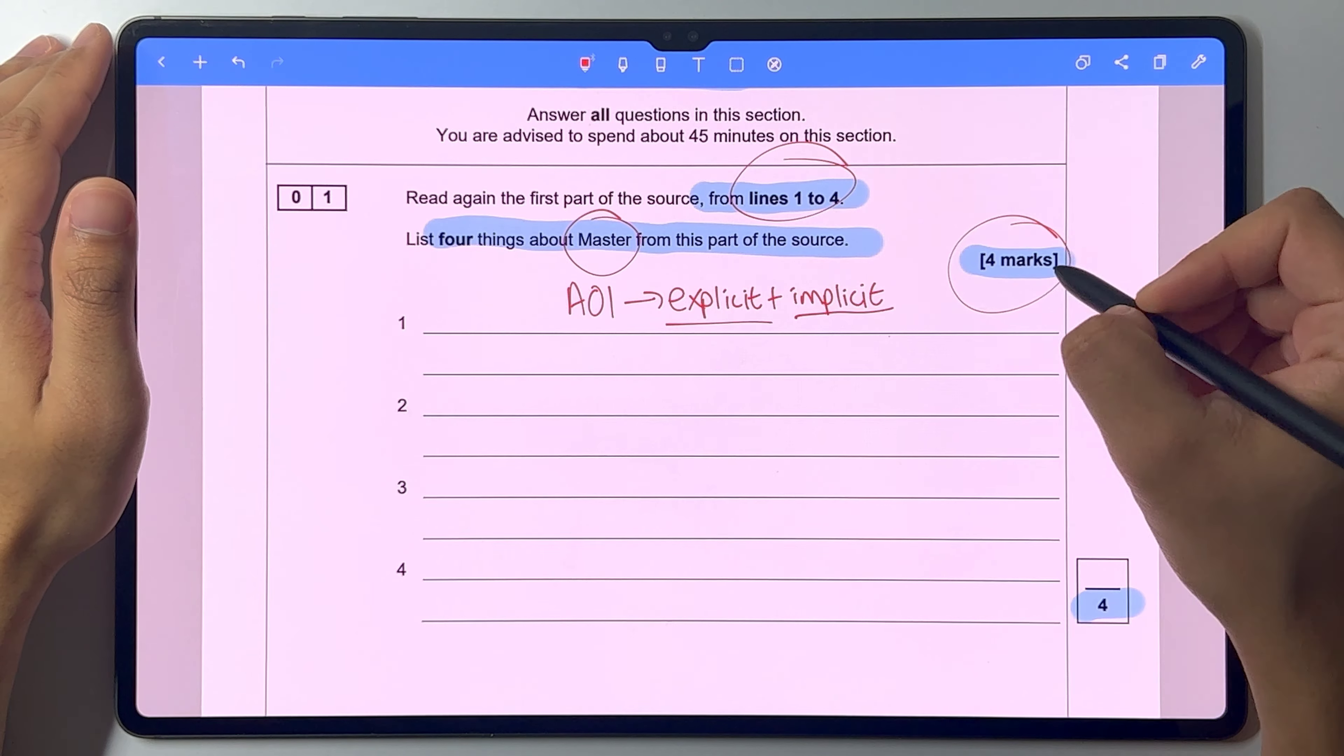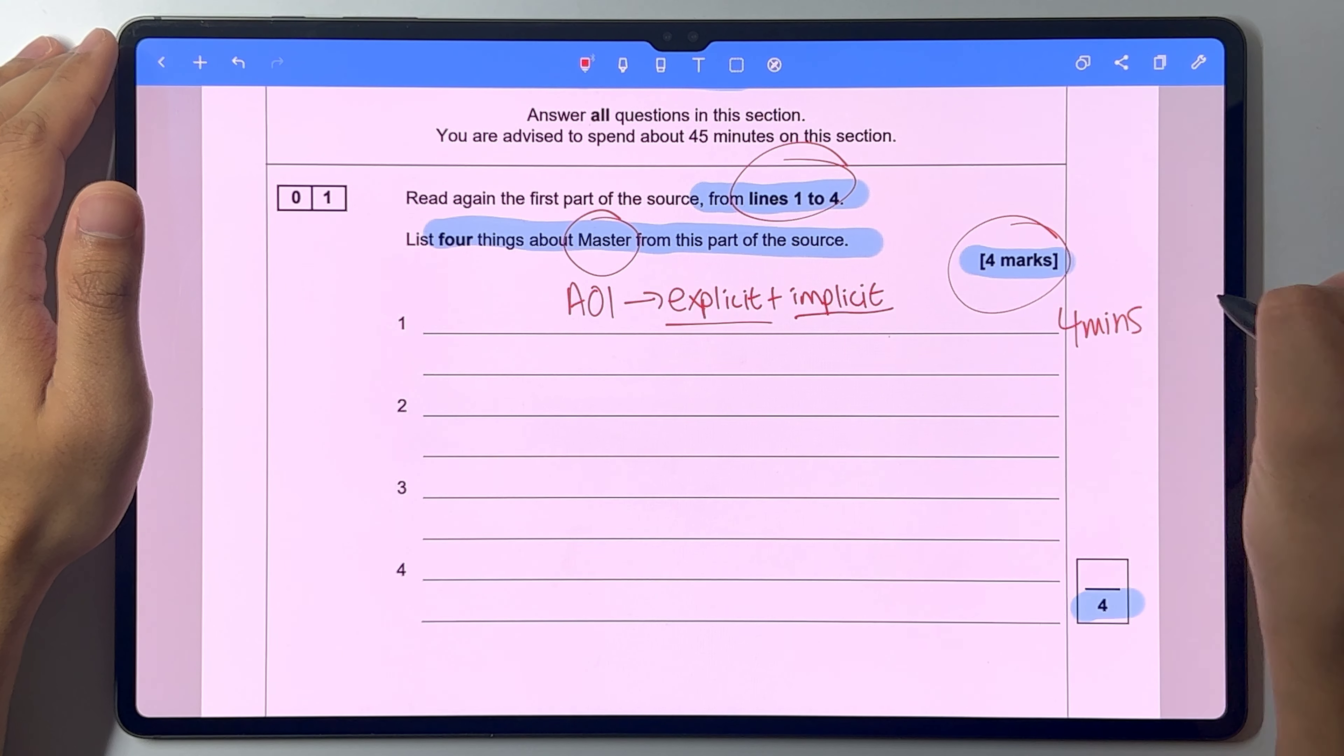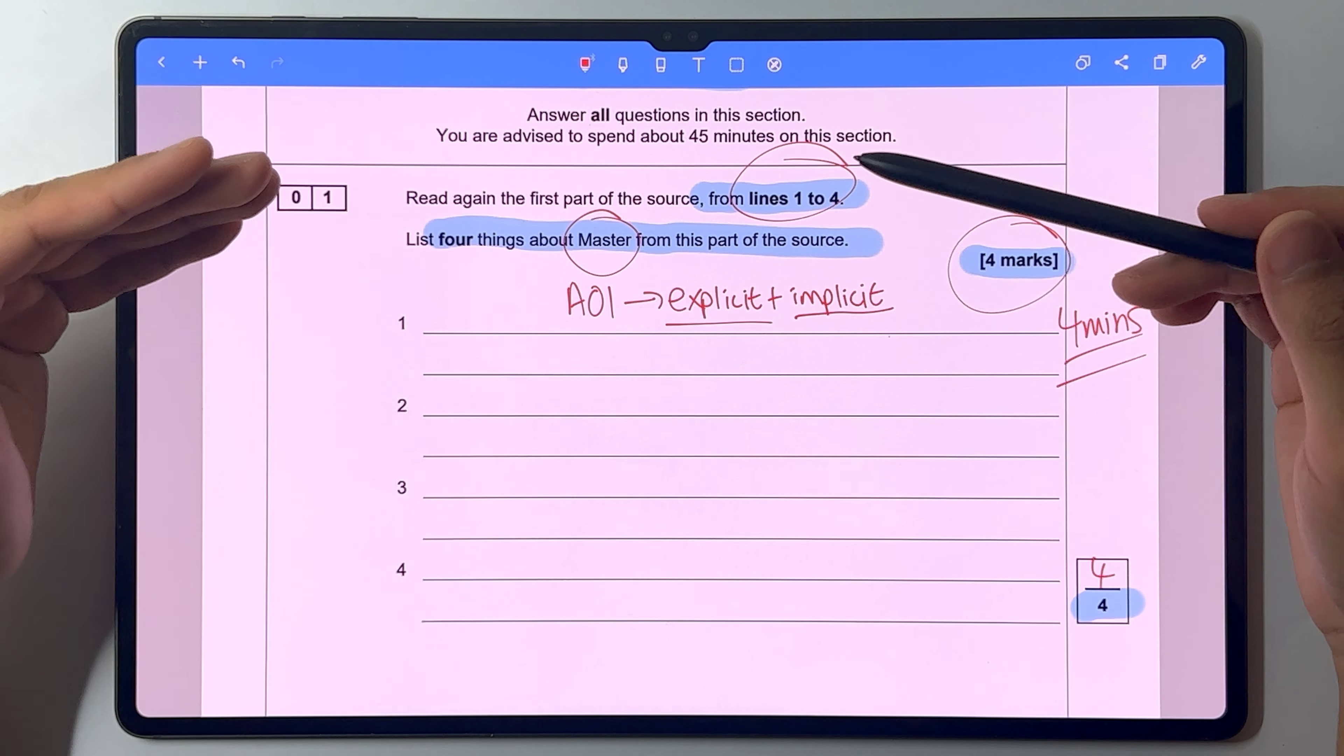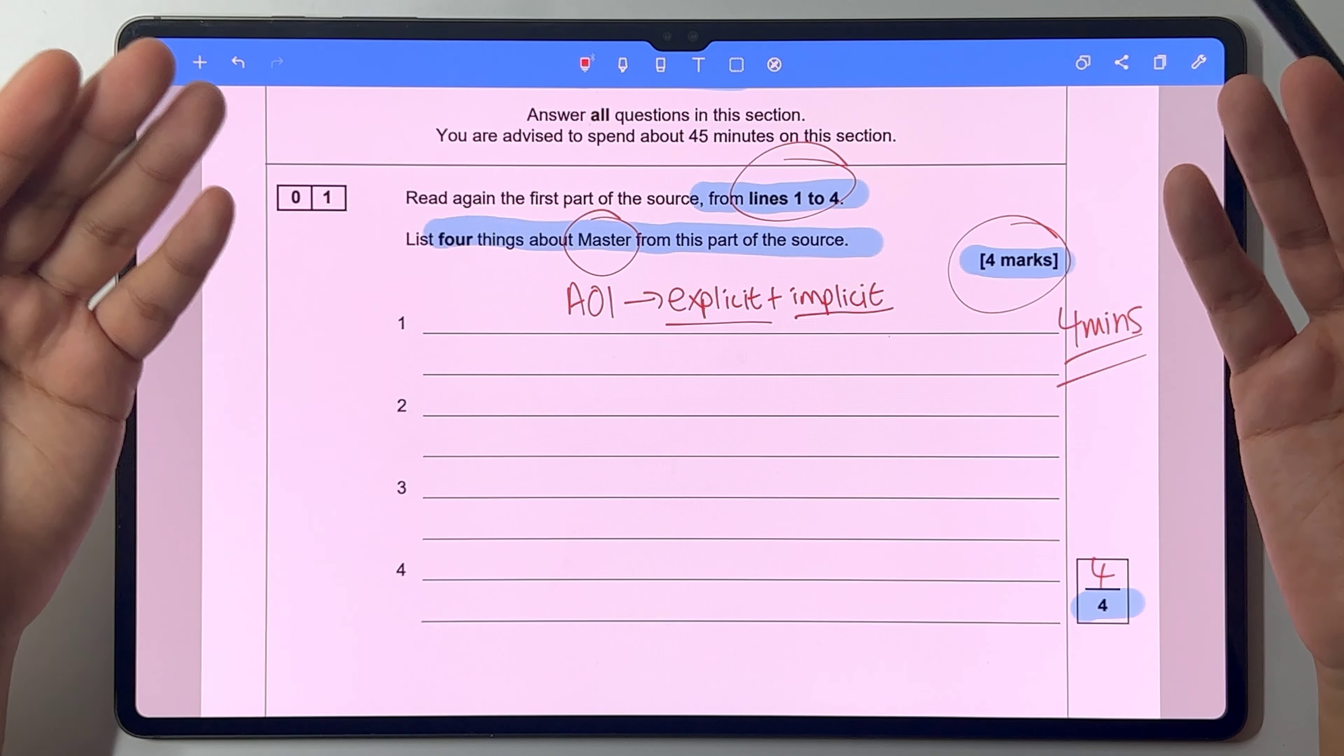And as it's four marks, you should probably spend four minutes on this question. To be honest, for all students, you should all be aiming for four out of four, as it's simply listing four things. And then you move on to question two.